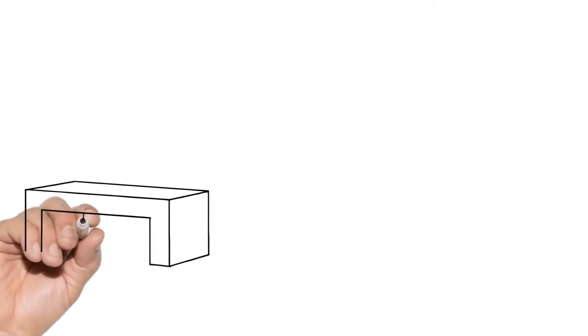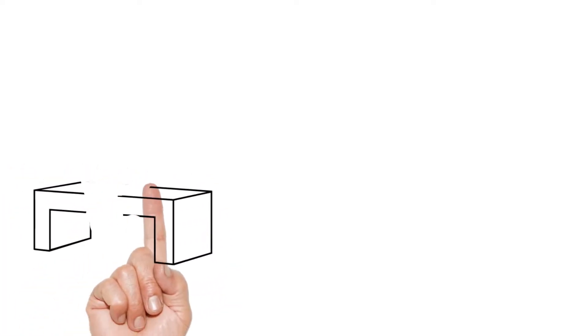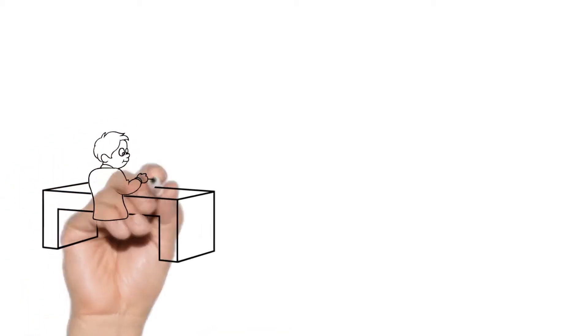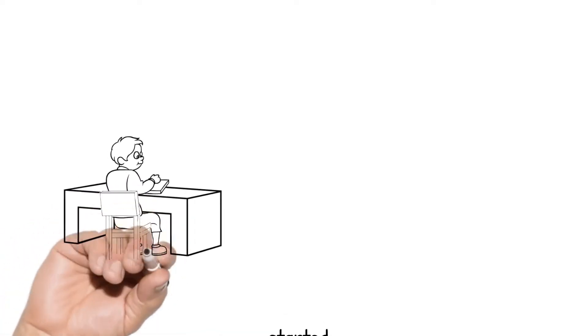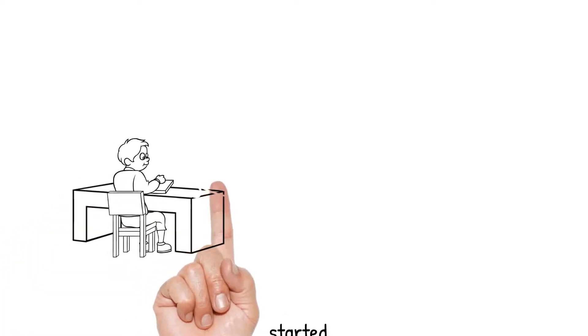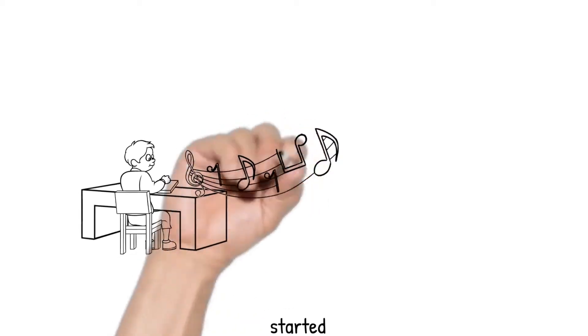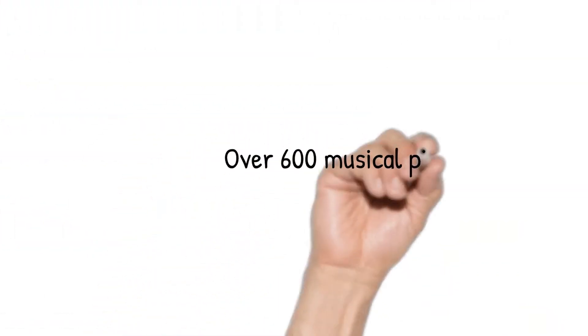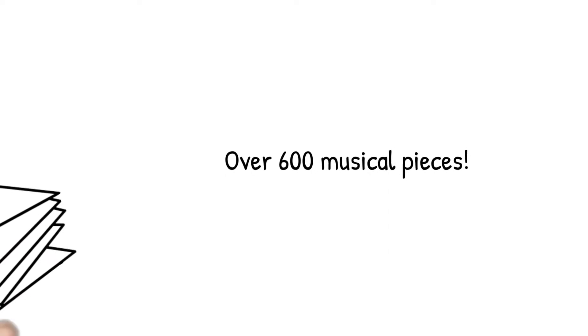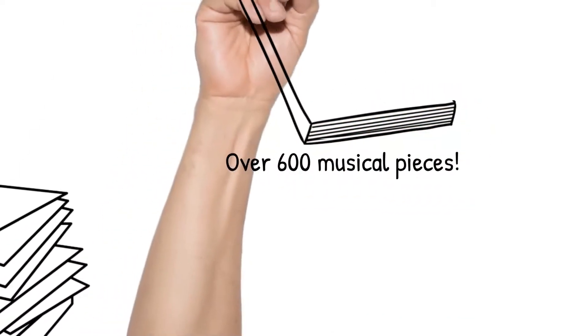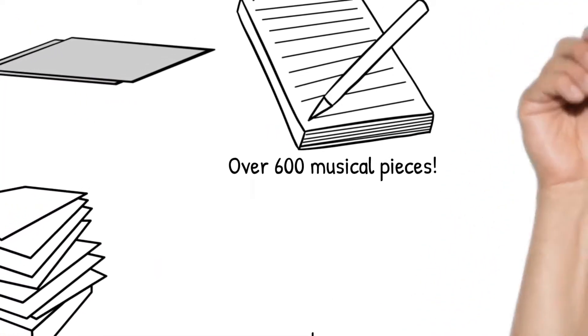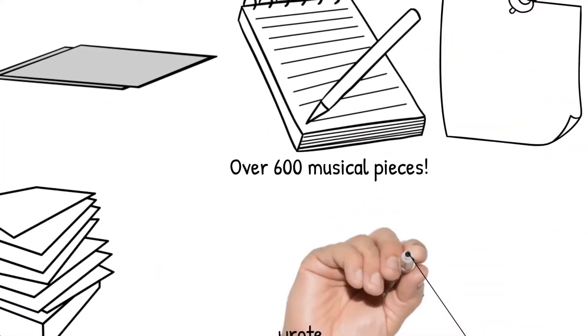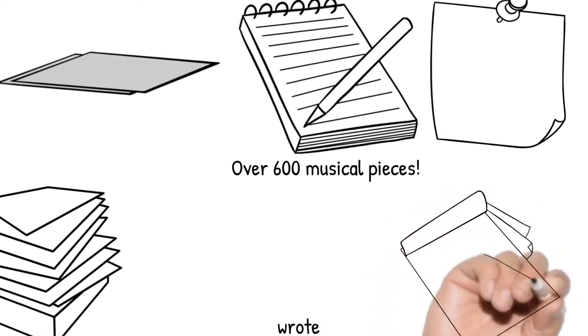Mozart started composing music at the age of five. He composed musical pieces he played for his father. His father was his teacher. He taught him how to play musical instruments and how to write music. Mozart wrote over 600 pieces of music in his life. Many of his most famous works came from later in his life. On average, he wrote 17 compositions every year.